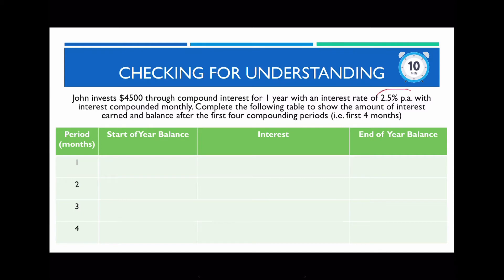Notice that the interest rate is given per annum, meaning per year. To calculate the amount of interest earned per month, you need to multiply by 1/12 since there are 12 months in a year. Give yourself 10 minutes to answer this question, then compare your answer with mine once you've written it in your exercise book.